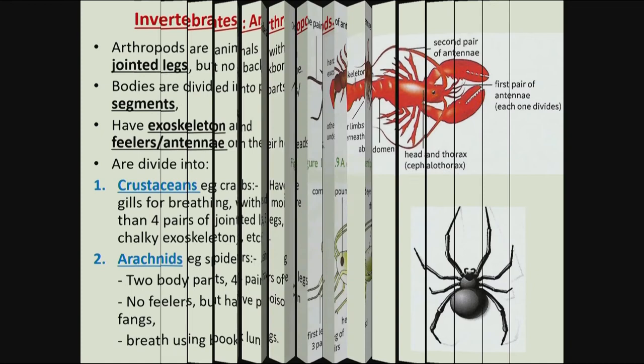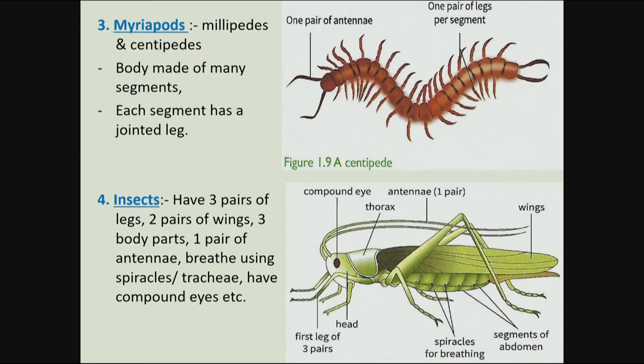The third group of arthropods are the myriapods — the millipedes and centipedes. These are characterized by having so many legs. Their body has many segments divided into many parts, and each segment has at least one pair of jointed legs.